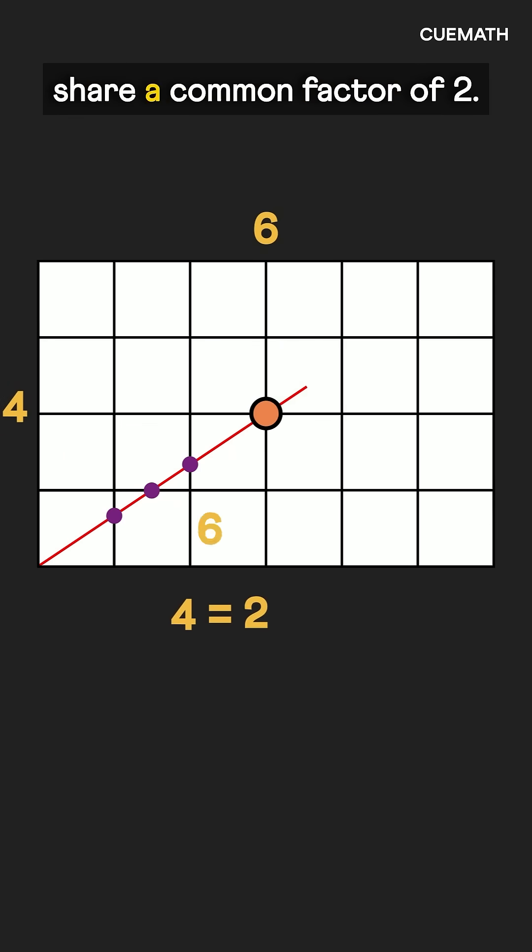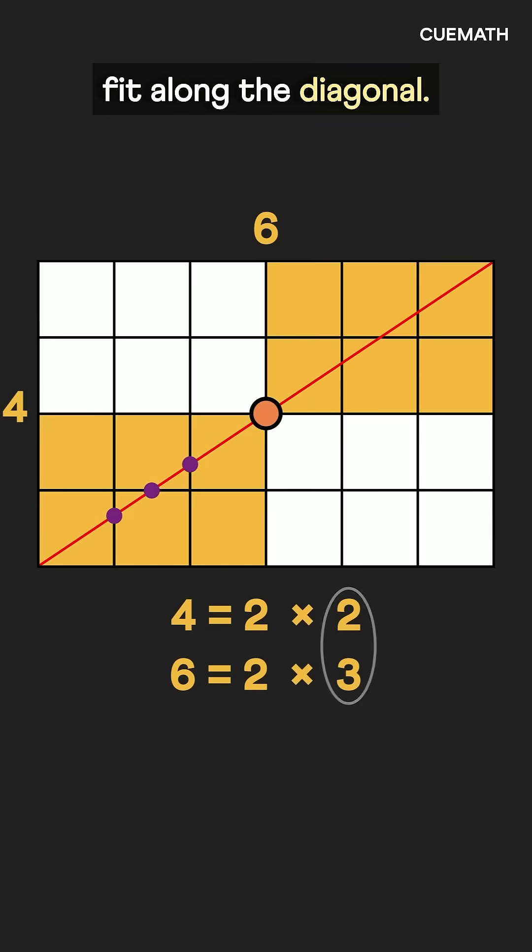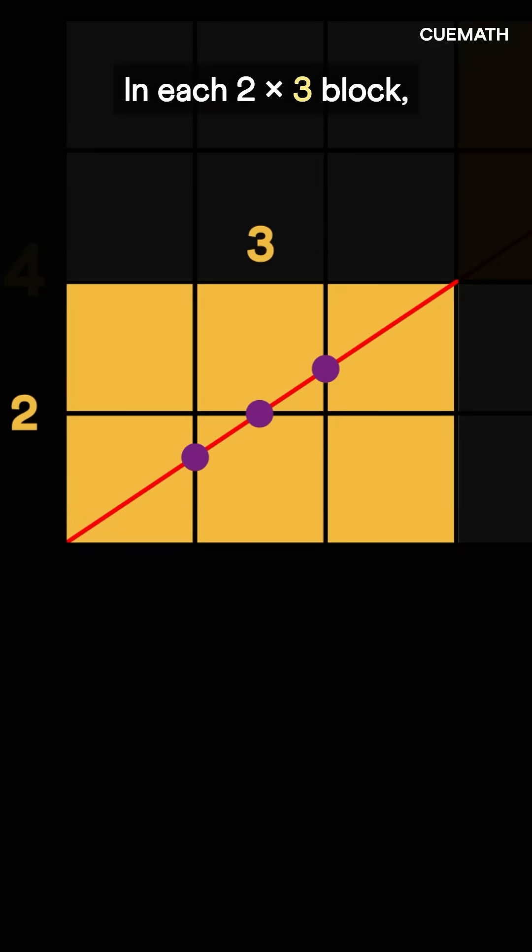That's because 4 and 6 share a common factor of 2, thus two 2 by 3 rectangles fit along the diagonal. In each 2 by 3 block, the diagonal crosses one horizontal and two vertical lines. Including the starting square, that's four squares.